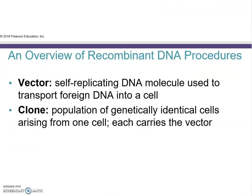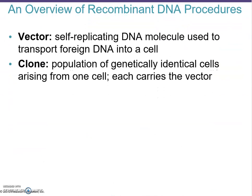Here's an overview of recombinant DNA procedures. You need to manipulate DNA, and a great vehicle for transferring genetic material is a vector. Think of a vector as a vehicle that transports your DNA to where you want it to be. Small vectors include plasmids; larger vectors can be as large as artificial chromosomes. These are self-replicating DNA molecules used to transport foreign DNA into a cell.